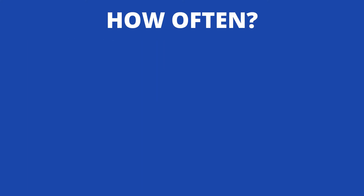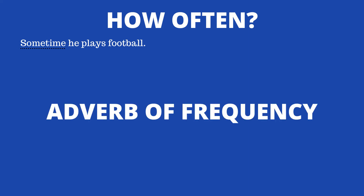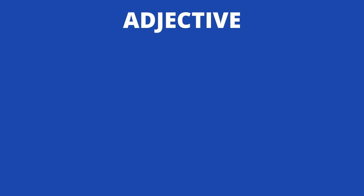Next, 'how often' or how frequently an action is performed: 'Sometimes he plays football.' How often does he play football? Sometimes. Any adverb that describes the frequency of an action is called an adverb of frequency.